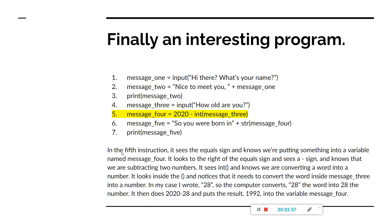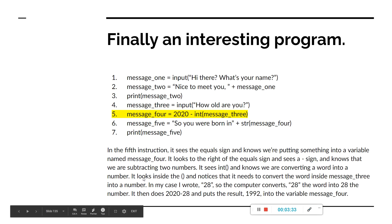If you're getting lost right now, I'm going to draw it and make it very clear. In the fifth instruction, it sees the equal sign and knows we're putting something into a variable named message four. It looks to the right of the equal sign and sees a minus sign — it knows we're subtracting two numbers. It sees 'int' and knows we're converting a word into a number. It looks inside the brackets and notices it needs to convert the word inside message three into a number. In my case I wrote 28, so the computer converts 28 the word into 28 the number, then does 2020 minus 28 and puts the result, 1992, into message four.